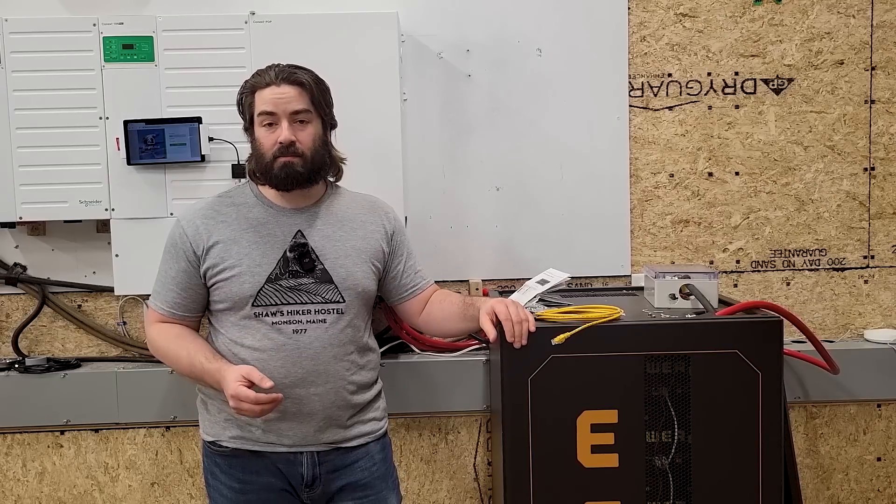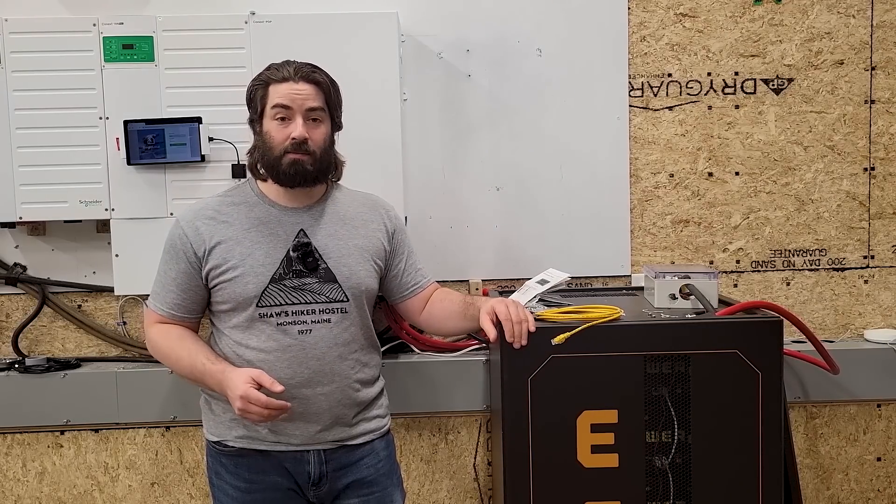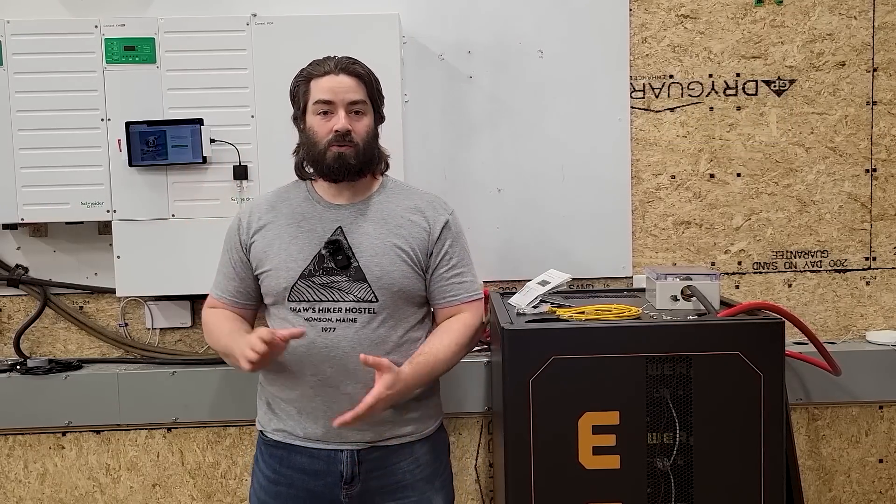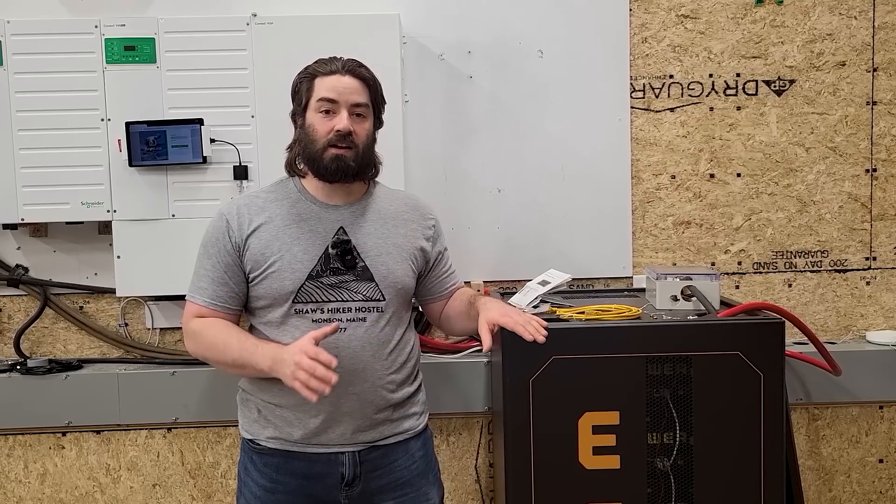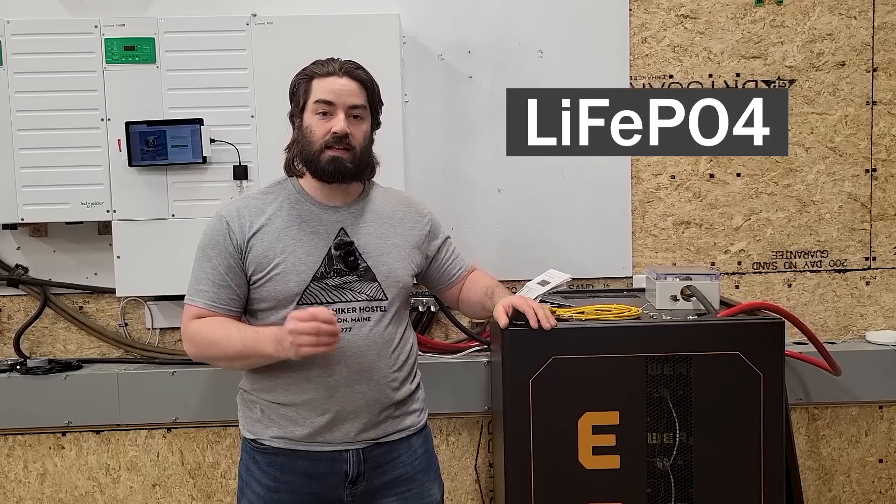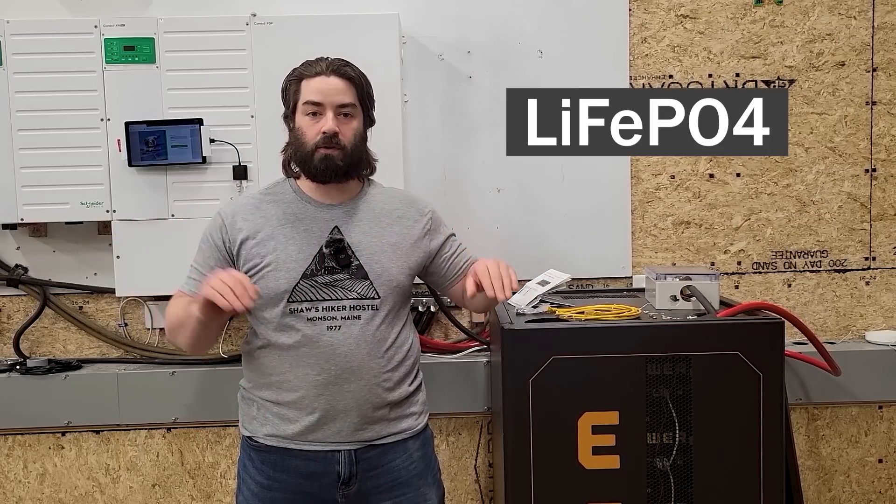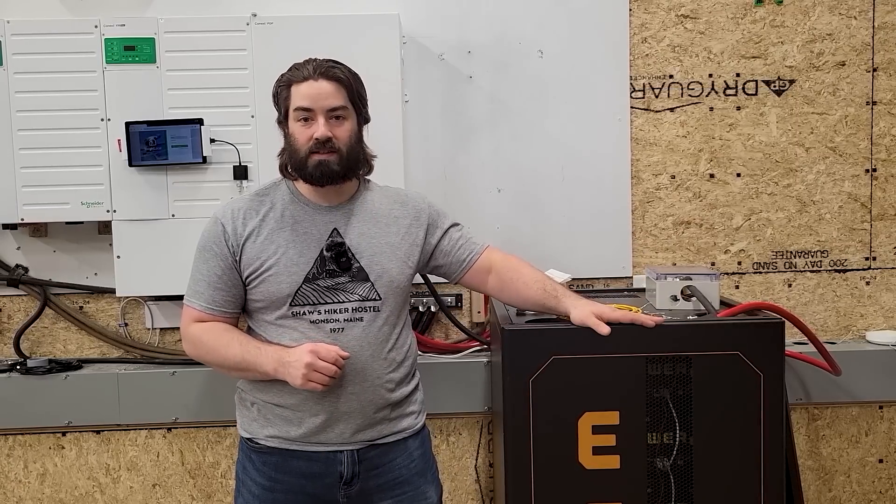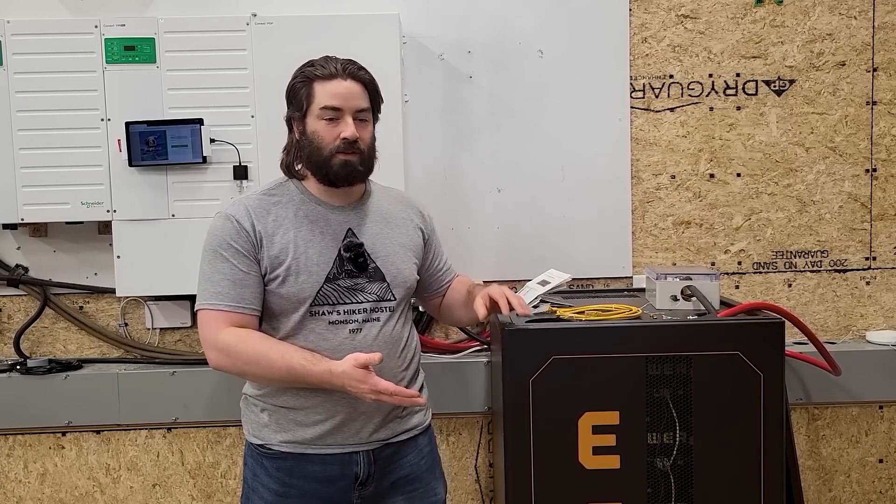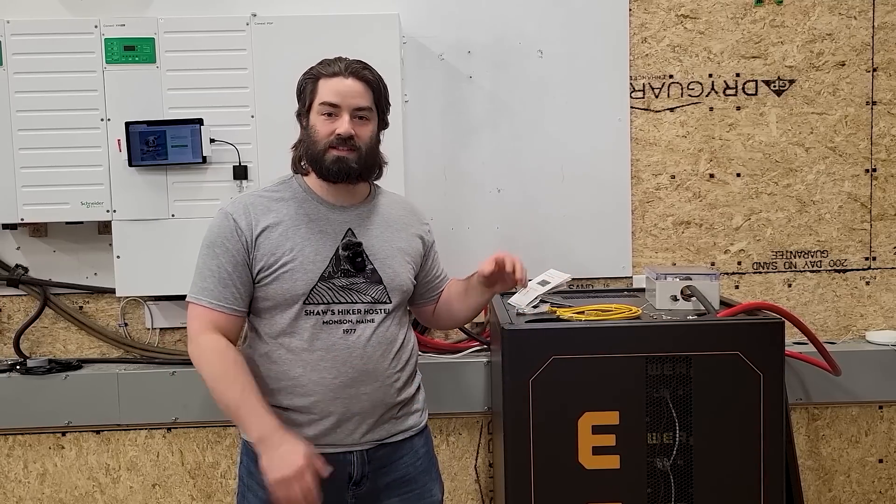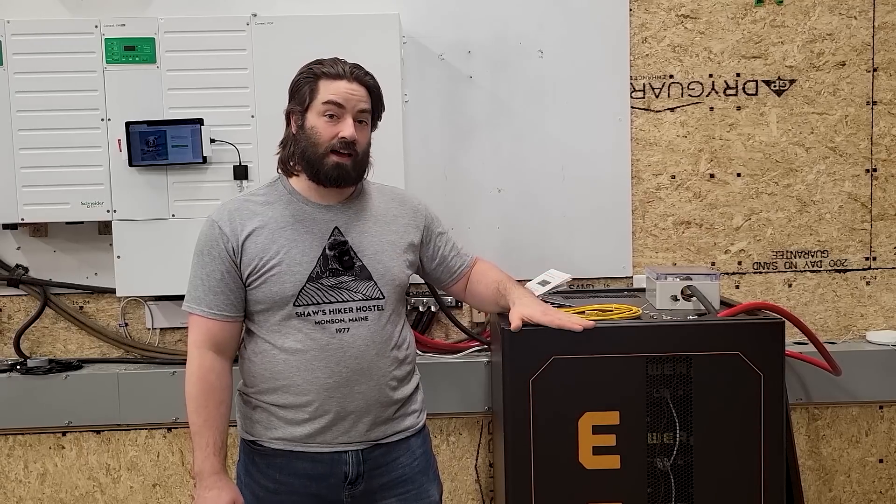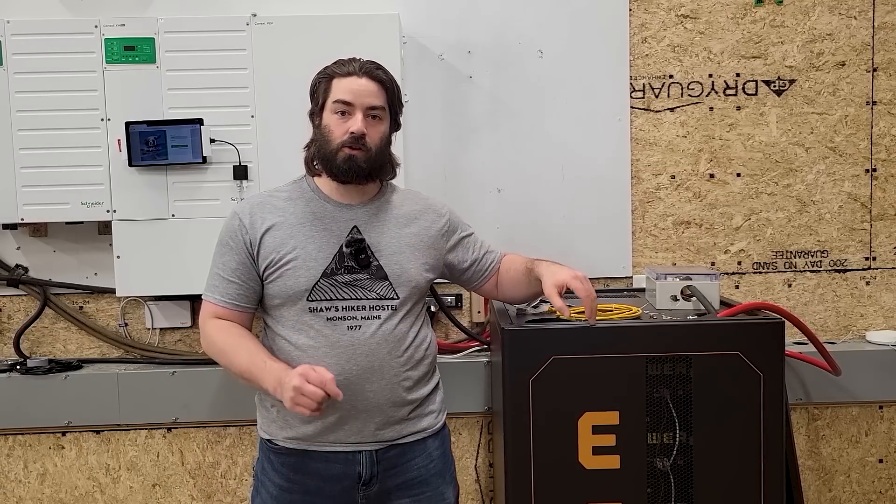Now that's just one example, and that's the main example that I have with my setup here. For the last few months, we've been running the entire property on this one Schneider inverter. It's been working really well. This is model XW Pro 6848. Currently, this inverter is only being able to see the voltage of the battery bank. It does not know the state of charge. Now this battery bank is lithium iron phosphate, which has a very flat voltage profile, meaning that it's almost always at 53 volts. And you don't know if it's at 90% state of charge or 20% state of charge. It's still somewhere in that 52, 53 volt range.